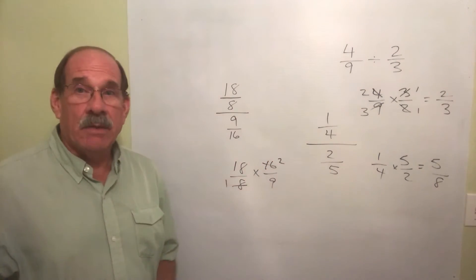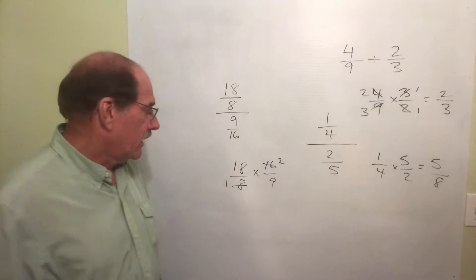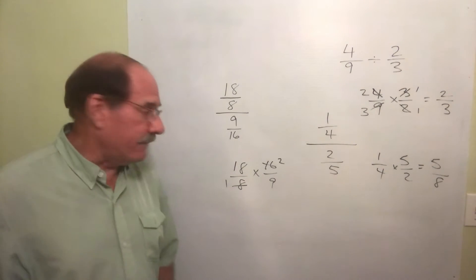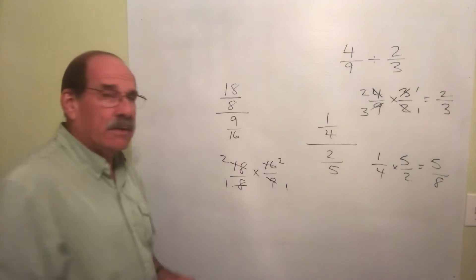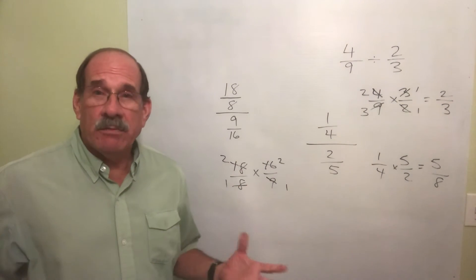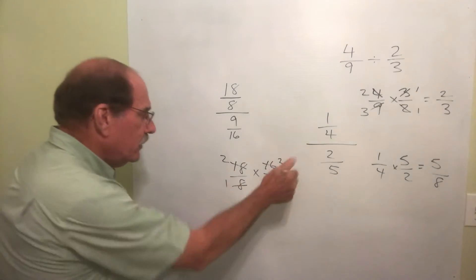This and this by the same number, can't I? Yes, I can. I can divide both those by 9. Divide this by 9, that's 1. Divide this by 9, that's 2. Now all I have to do is multiply the two top numbers. 2 times 2 is...